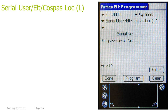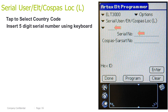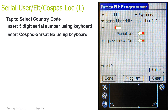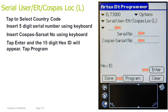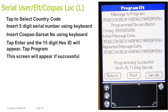Serial user ELT Cospas location long. Tap to select a country code. Insert the 5-digit serial number using the keyboard. Insert Cospas-Sarsat number using the keyboard. Tap Enter and the 15-digit HEX ID will appear. Tap Program. This screen will appear if successful.